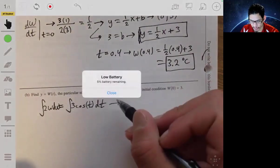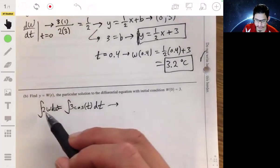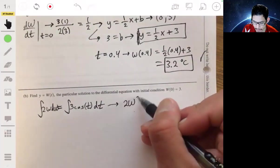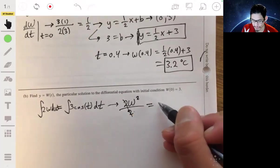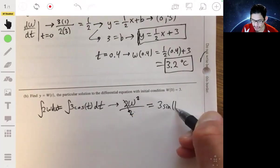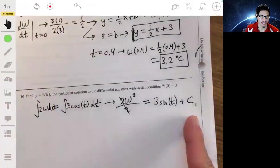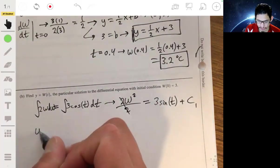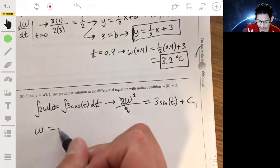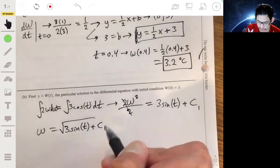So, we get, on the left, 2W squared over 2, which 2's cancel, is equal to 3 sine of T plus our constant C1. So, let's find the value of that constant. And let's first solve for W. W will just be then the square root of 3 sine of T plus C1.